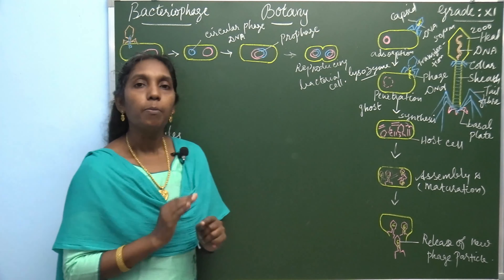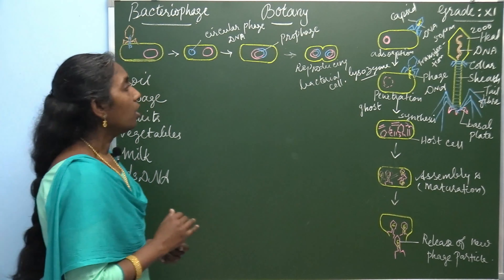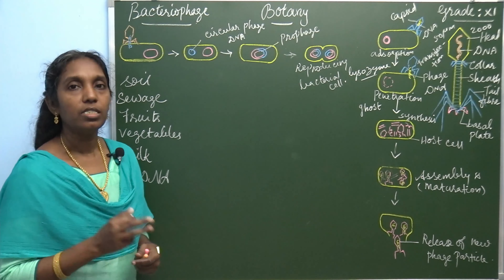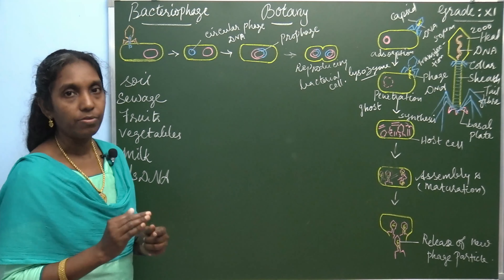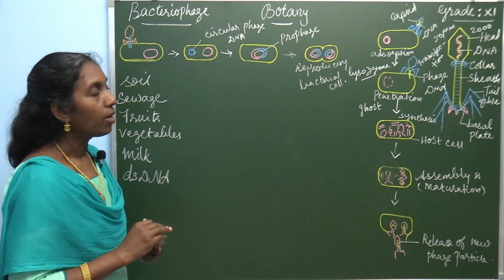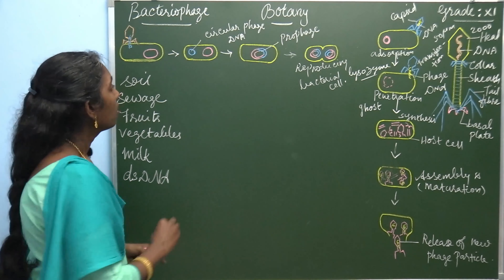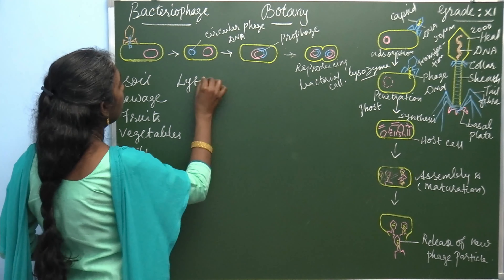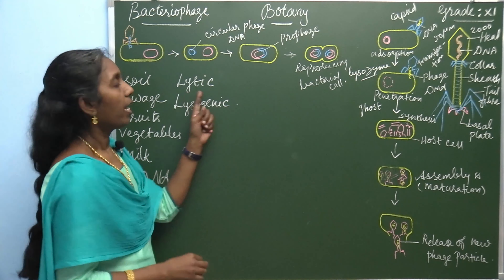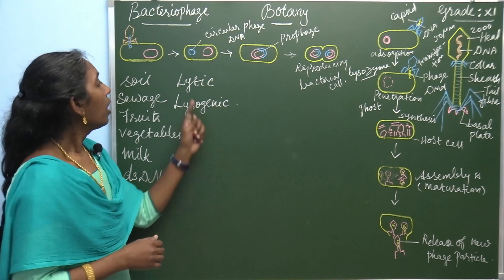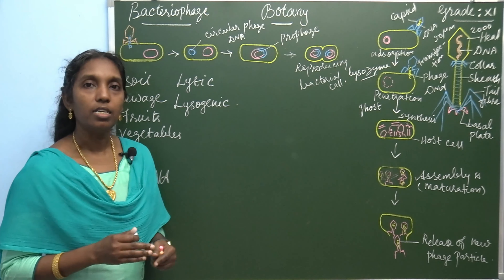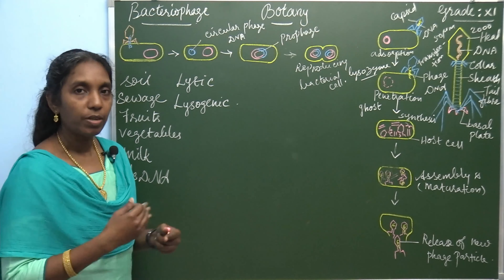Now, the life cycle of bacteriophage. Bacteriophages show two different types of life cycle — they multiply in two different ways. They are named the lytic cycle and the lysogenic cycle. The lytic cycle is otherwise called the virulent cycle. The lysogenic cycle is called the avirulent cycle.